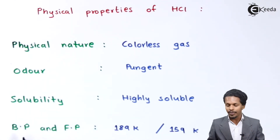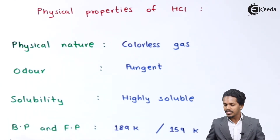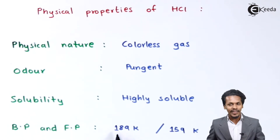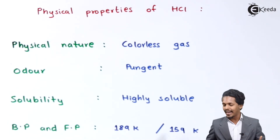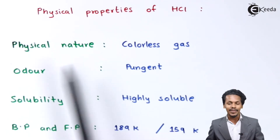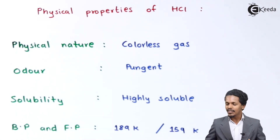Talking about the boiling point and freezing point, the boiling point of HCl has been found to be 189 Kelvin, while the freezing point is 159 Kelvin. These are the few points related to the physical properties of HCl.